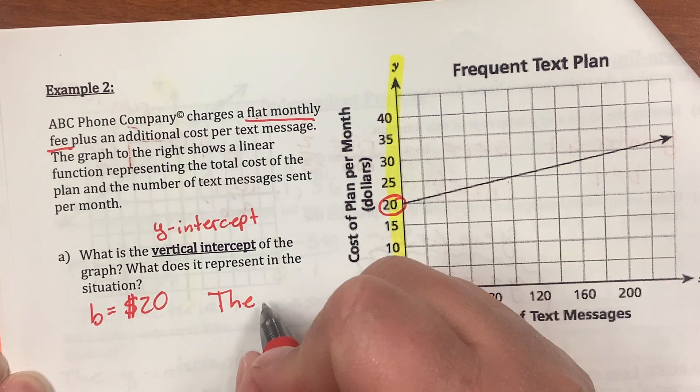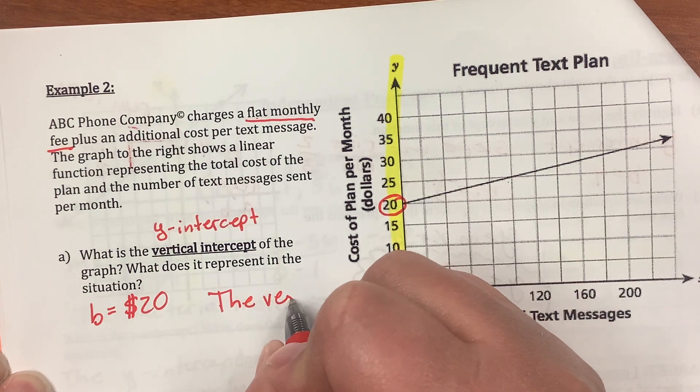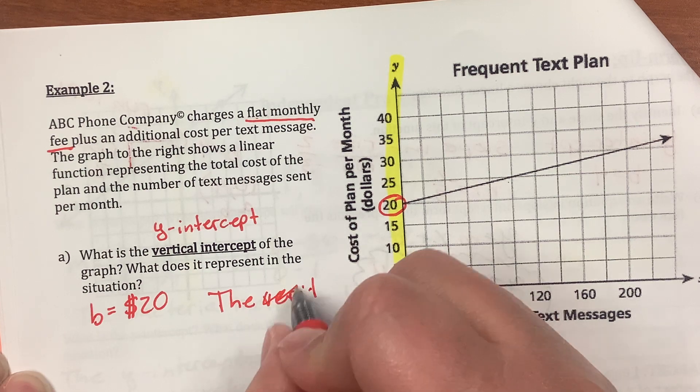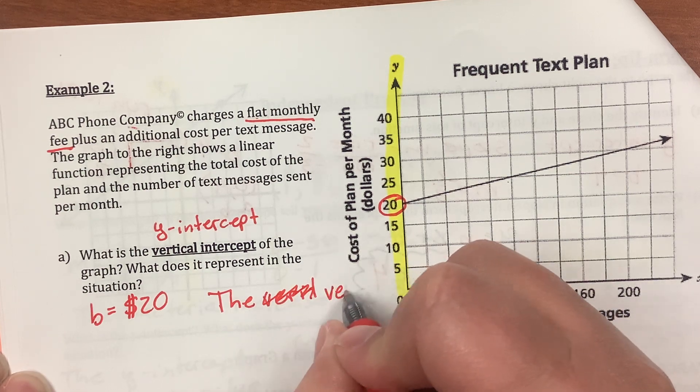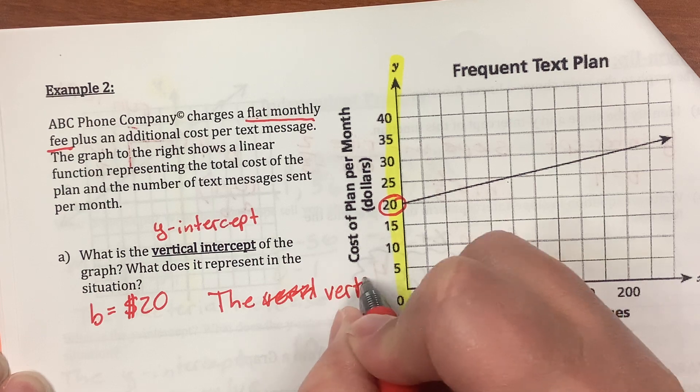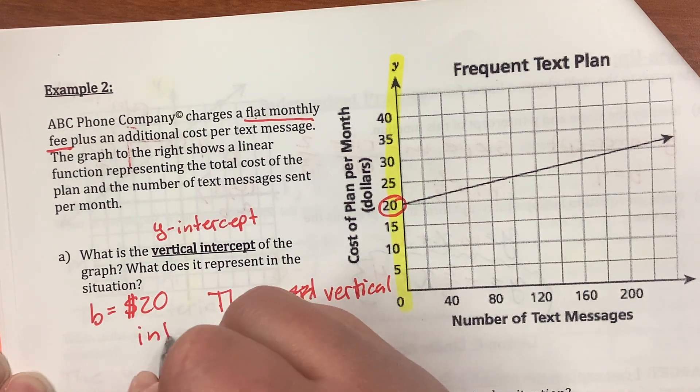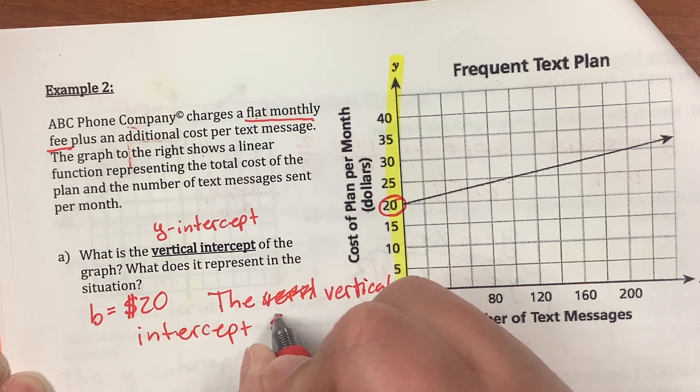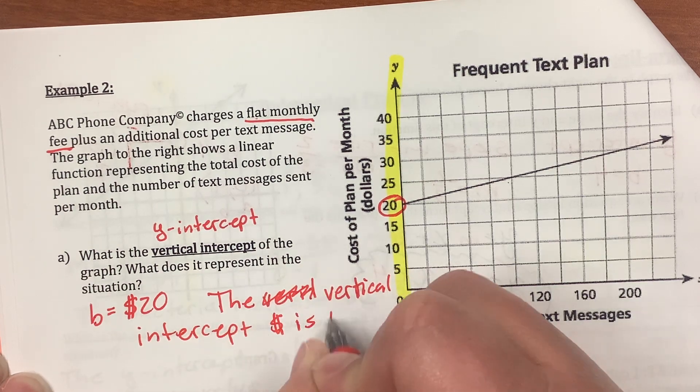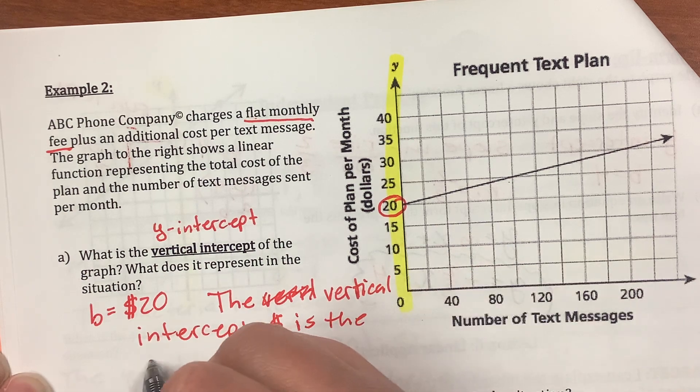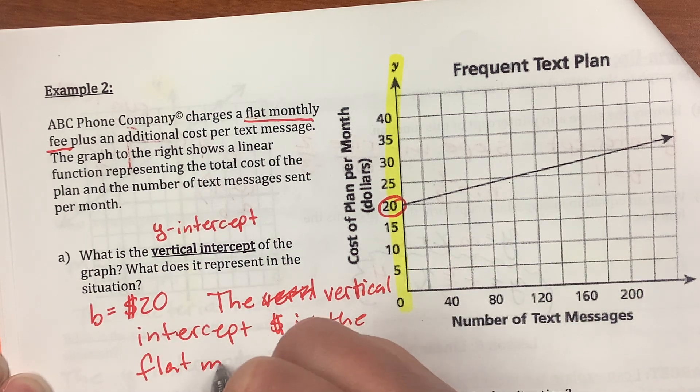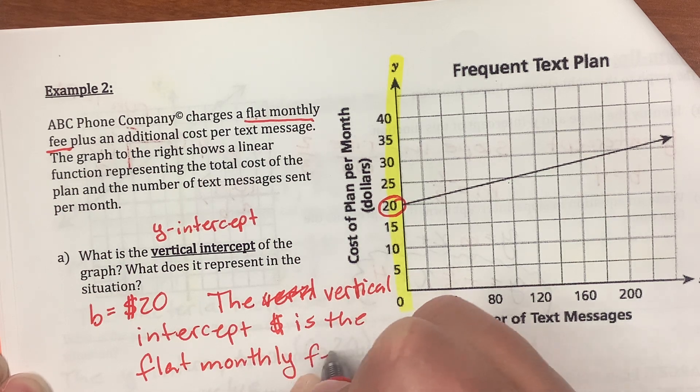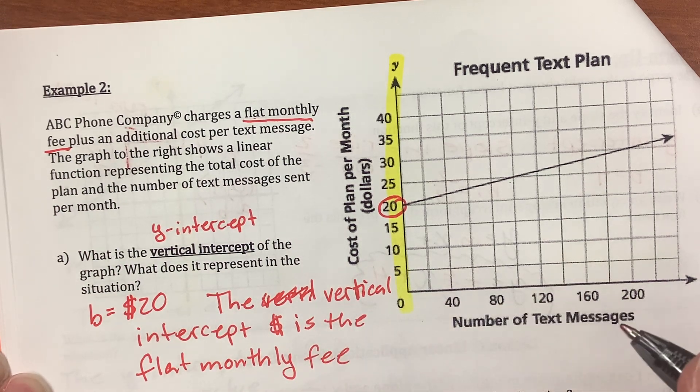My phone has a flat monthly fee of $39.95. No matter whether I use the phone or not, that's the fee that I have to pay every month just to keep my phone. It works that way with cable television and things like that too. It's the amount you pay every month, whether or not you use the service. So, this flat monthly fee of $20. The vertical intercept, $20 is the flat monthly fee.